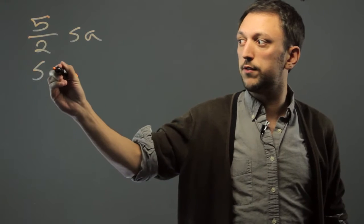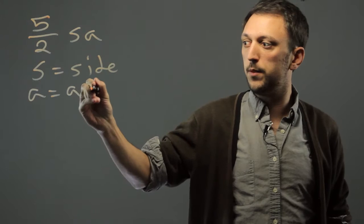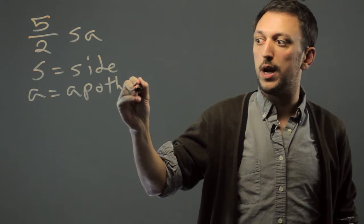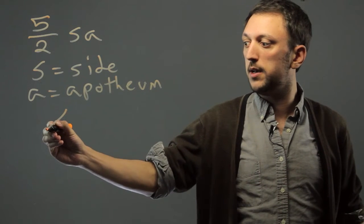Where S is side, A is apotheum, which is basically the radius of a polygon. So it's similar to a circle, but it's for a polygon.